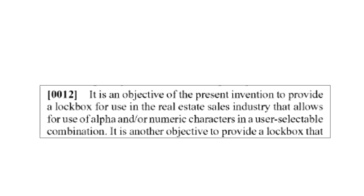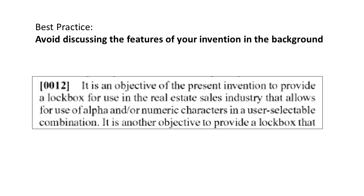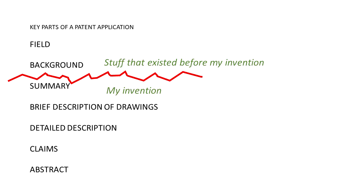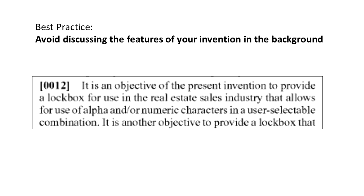So the idea is: don't do what you see here on screen — these different descriptions of previous patents and patent applications. Here is another issue with this background: while still being in the background section, they begin to write about features of the invention. We see the user-selectable combination and so forth. It's good to mention these advantages, but they do not belong in the background — they instead belong south of the line, in the sections intended for discussing the invention.